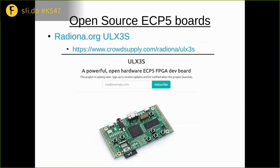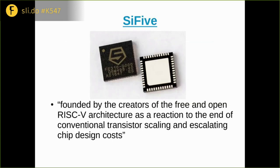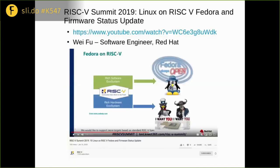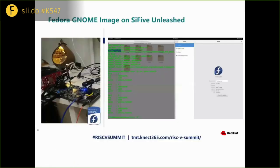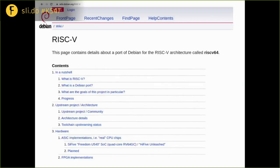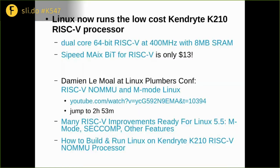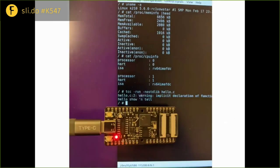There's also the Radiona board from a hackerspace in Croatia, which is also up for crowdfunding. There are also some chips — not just FPGAs — that can run Linux on RISC-V. One is from a company called SiFive, which has an evaluation board that's not generally available yet but is quite capable, and people at Fedora are using it to get Fedora running on RISC-V. Debian also has a port for RISC-V. Additionally, a very inexpensive board features the Kendryte K210 processor — a dual-core 64-bit RISC-V chip available for $13 from Seeed, though it only has 8 megabytes of SRAM. Someone named Davide Lamal at Western Digital did significant work to get Linux running on it.